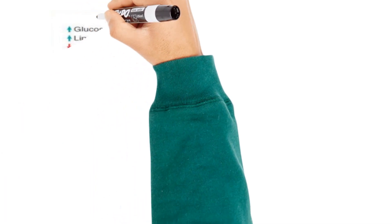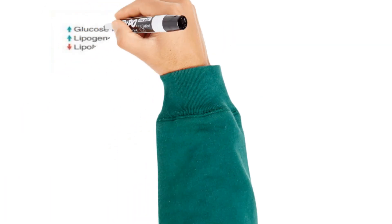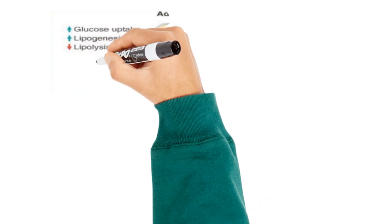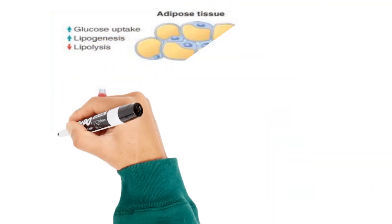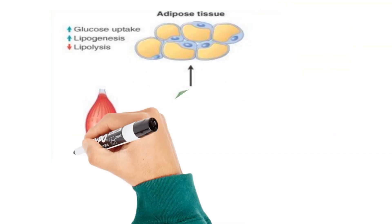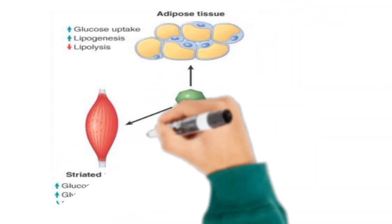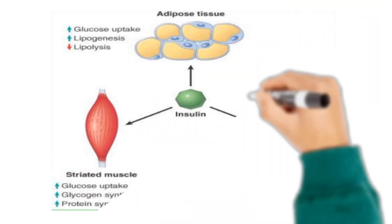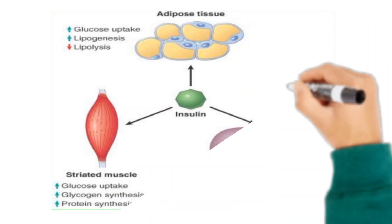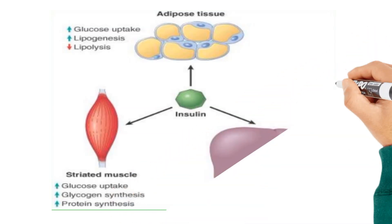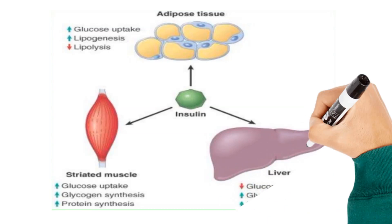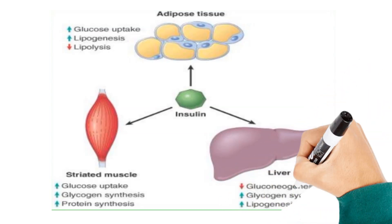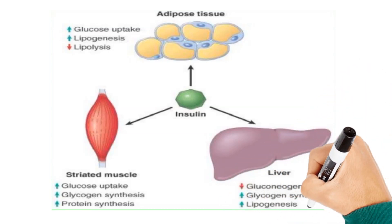In summary, insulin facilitates the uptake and utilization of glucose by the body and storage of excess glucose as glycogen in the liver and skeletal muscle. It also indirectly increases the formation and accumulation of triglycerides in adipose tissue, causing carbohydrate to be used as the primary energy source instead of fats, leading to increased fat accumulation in the body.